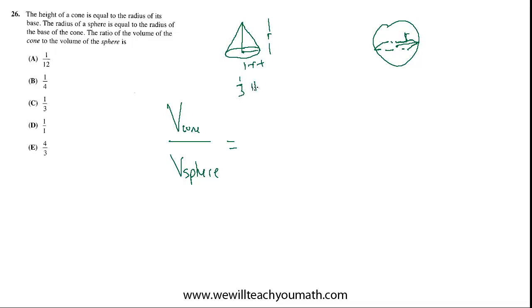is one-third pi r squared, which is the area of a circle, right? That's the area of the base. It's one-third times pi r squared times the height, H. But in this case, the height is R.